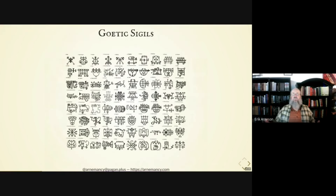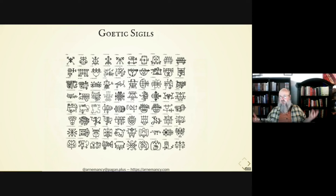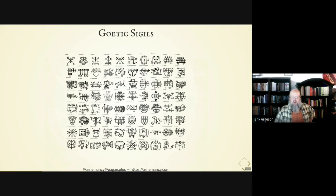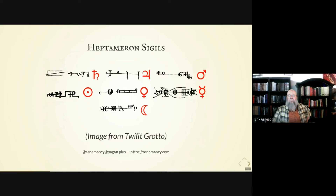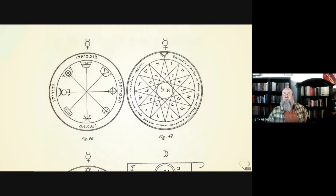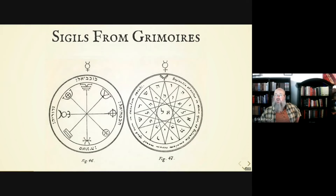Here are all the sigils of the Ars Goetia — also, I think, from the Mathers version — and these are all tied to various spirits, which we usually call Goetic demons, that do various earthly tasks and things like that. And then another really famous set are the sigils from the Heptameron, which was a grimoire included in the fourth book of occult philosophy.